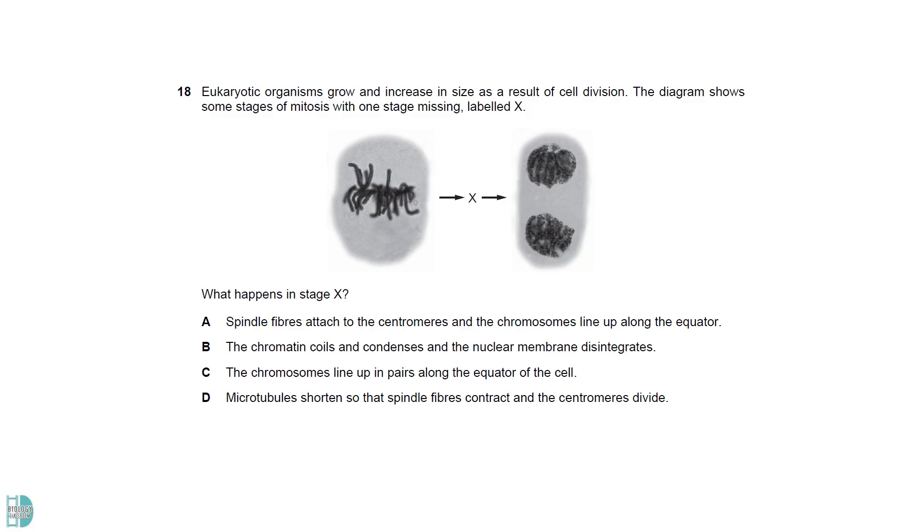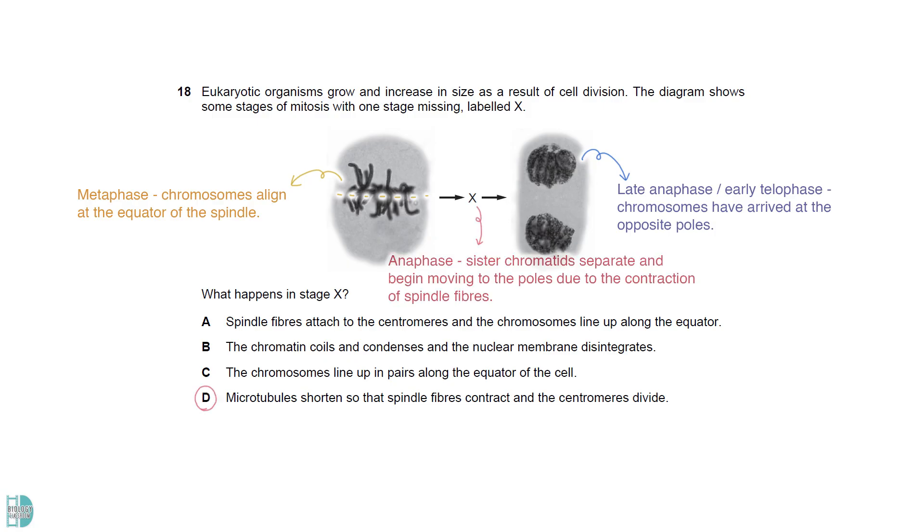The cell on the left shows metaphase, where the chromosomes align at the equator of the spindle. The one on the right shows late anaphase or early telophase, as the chromosomes have arrived at the opposite poles. X should be in anaphase, where the sister chromatids separate and begin to move to the opposite poles due to the contraction of spindle fibers. This is correctly described in option D. A describes metaphase, and B is about prophase. C does not take place in mitosis, as homologous chromosomes would not pair up. This option describes metaphase 1 in meiosis.